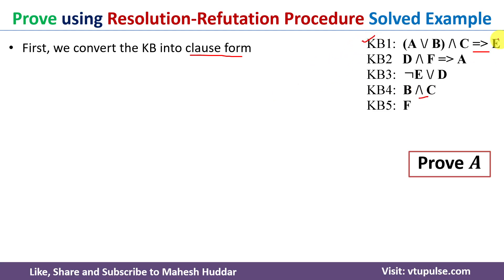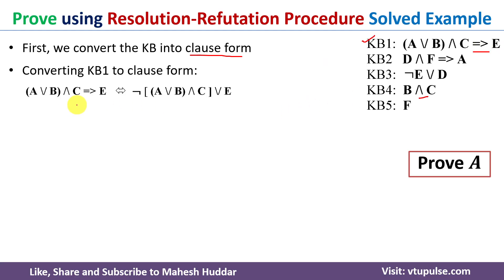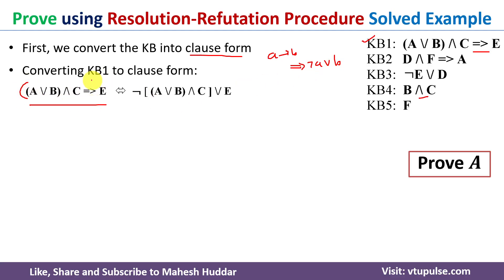We will start with the first knowledge base — we have an implication here. If you have something like A implies B, it can be written as negation of A or B. Similarly, in this case, we can write this statement as negation of this whole part or E.